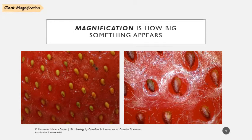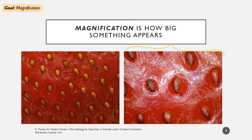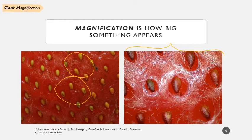One goal of microscopy — probably the most obvious — is to see things too small to see otherwise, which requires magnification: zooming in on something. Magnification overall is how big something appears. For example, two images of the same strawberry: the one on the left is less zoomed in, the one on the right is more magnified. As you zoom in, you see less of the overall two-dimensional surface but more details you were not able to resolve before.